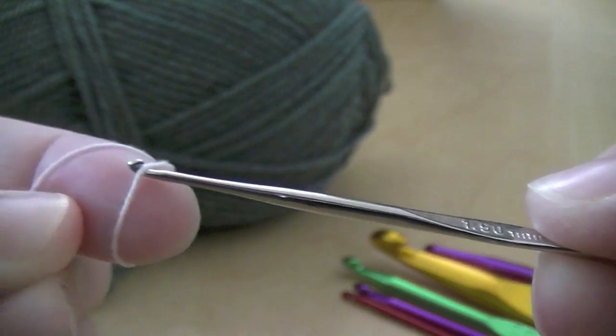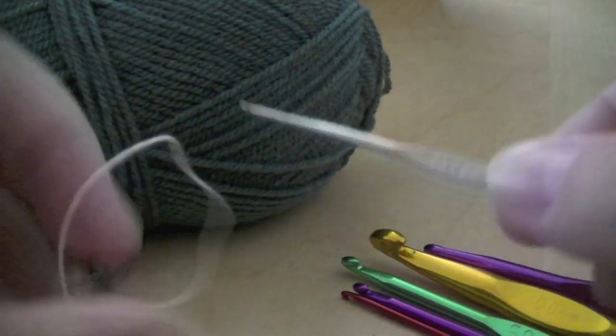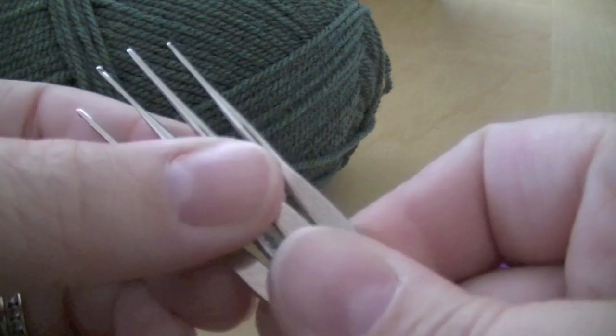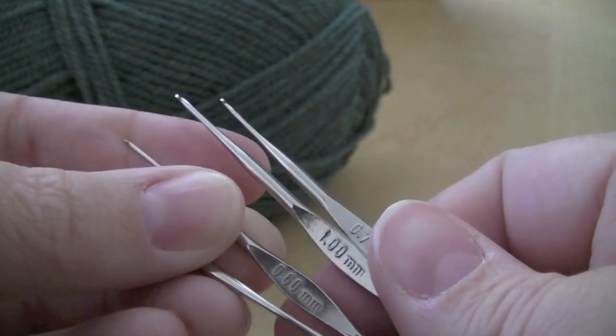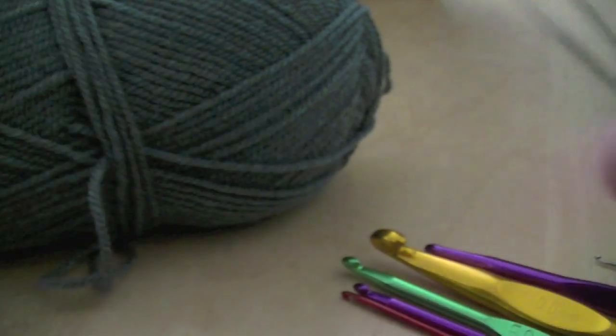I just pull that through there, you can see that that's what that's used for. This one is a 1.5mm and I think the smallest one I've got is 0.6mm, yes there it is. Yeah, lethal weapons.